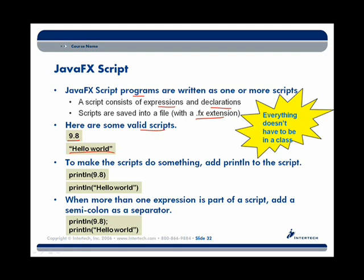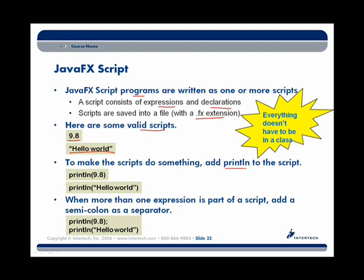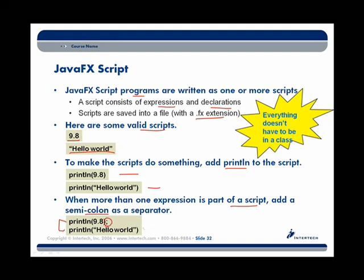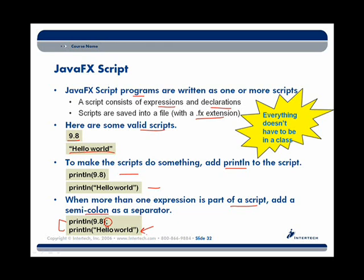A real JavaFX script has to actually start to work with things like the literals shown. So to do something interesting, we can add a print line function call on top of 9.8 or Hello World. Two valid scripts are: printing of 9.8 and printing of Hello World, probably dumping that content out to a DOS prompt. When more than one expression is part of a script, we have to add a semicolon to separate the two. Unlike Java, not every line of code has to have a semicolon — semicolons are only used to separate expressions, the building blocks of our JavaFX script.